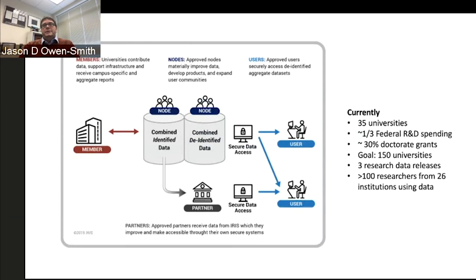Our university partners go into their HR, procurement, and sponsored project systems and pull detailed data about every payment of wages from a grant to a person, every purchase of goods and services from a vendor, and every subcontract to another performer. We ingest those data, clean and integrate them, and make a bunch of data linkages to scientific outcome information including patents, publications, and dissertation data, as well as contextual data about the grants themselves such as their abstracts and titles.